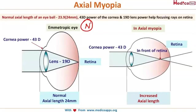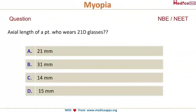In axial myopia, the length of the eyeball is increasing, but the 19 diopters of the lens and 43 diopters of the cornea remain the same. The power of convergence is unchanged, but the length to which convergence must occur is increasing, so there is no clear image forming — that is axial myopia.